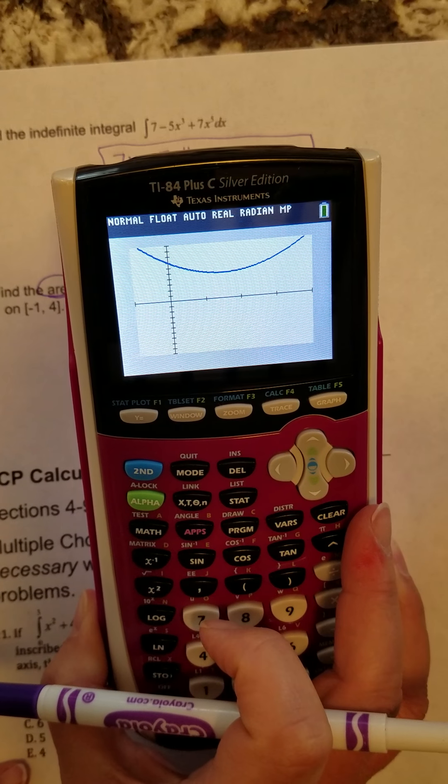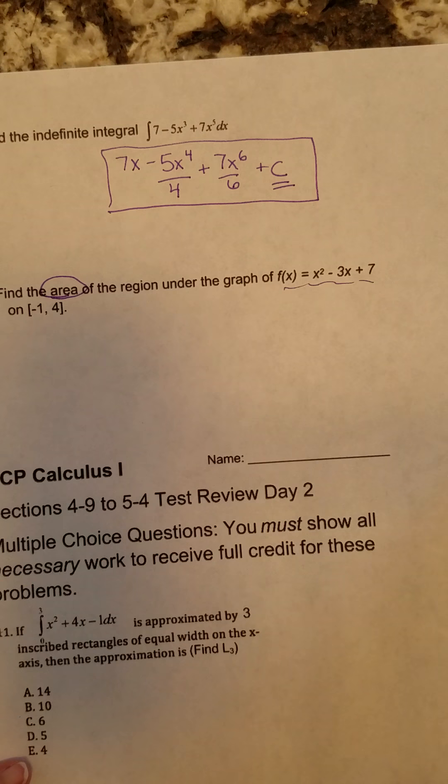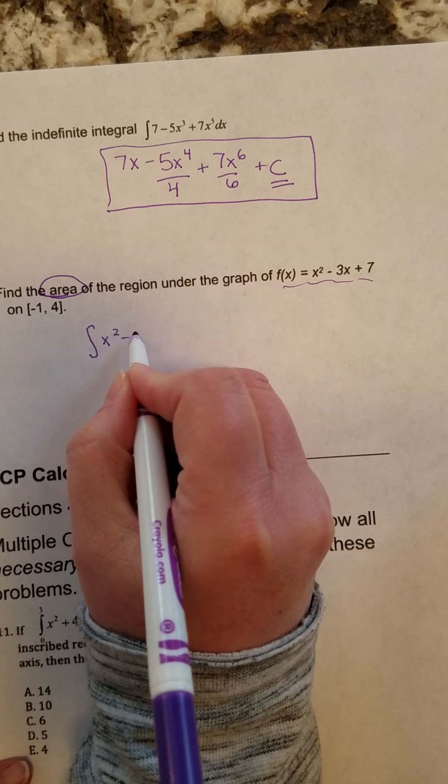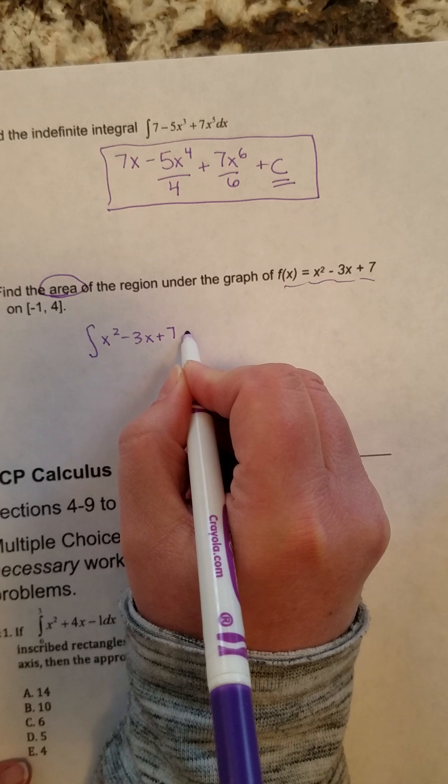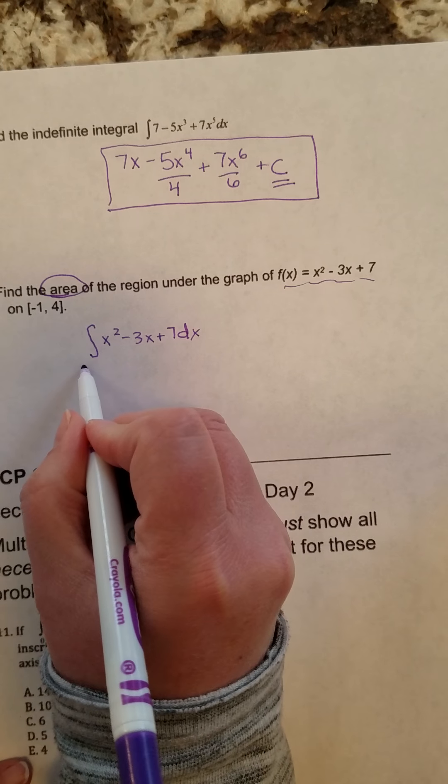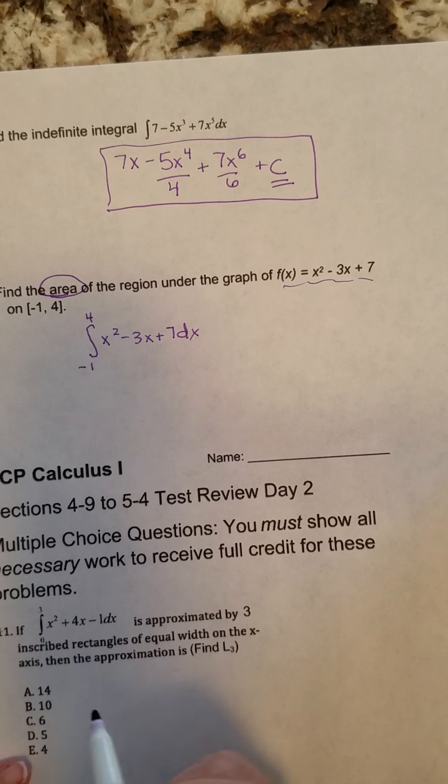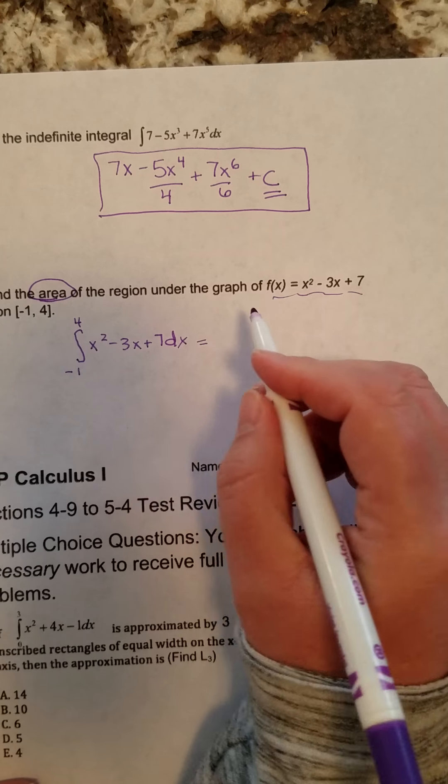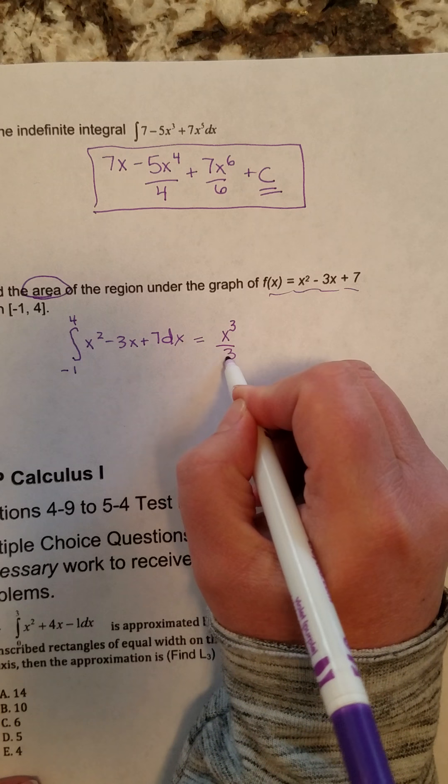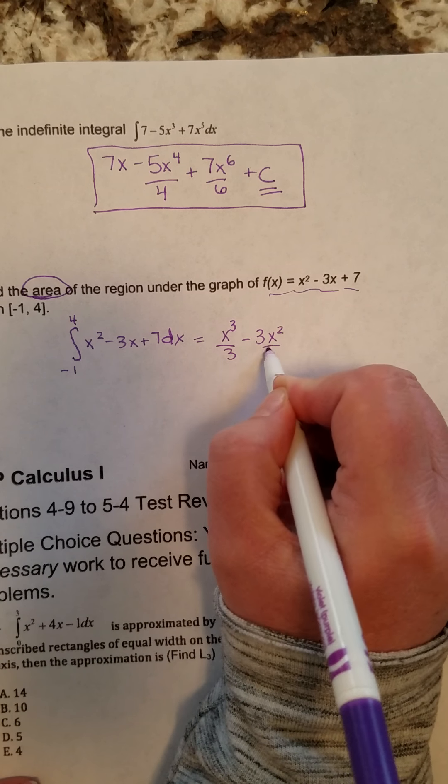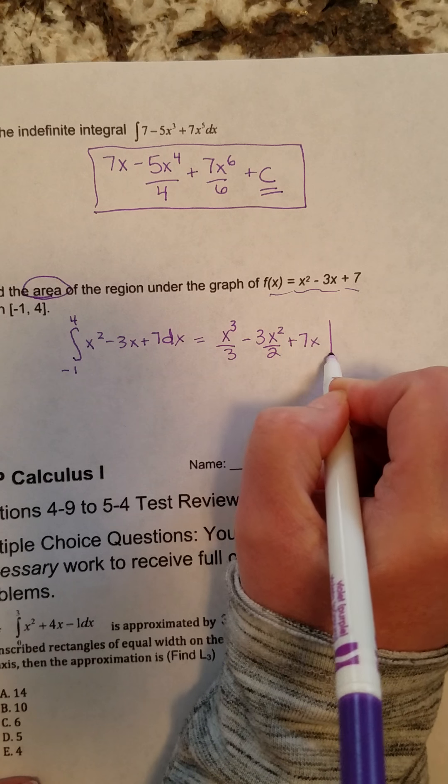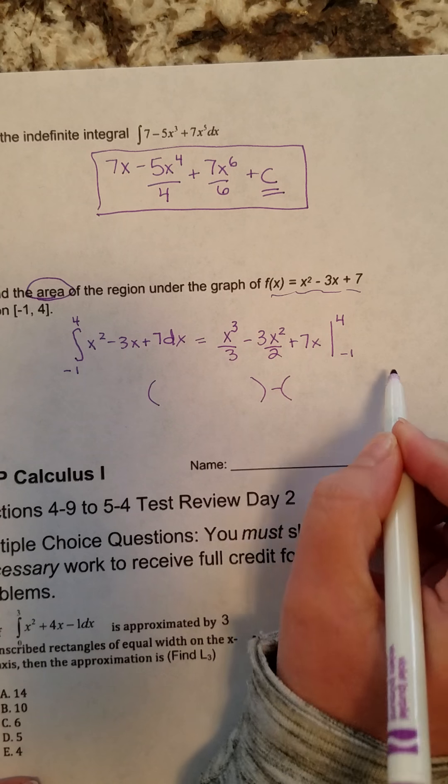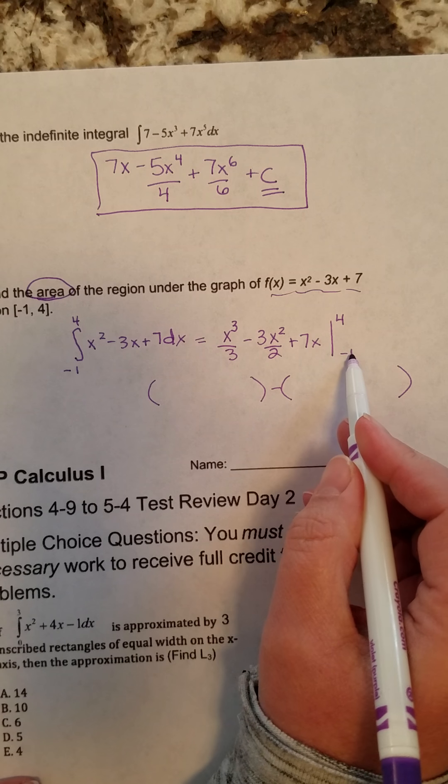So from that, I can take and set up an integral of the function x squared minus 3x plus 7 dx. And then this interval gives me my integral values from negative 1 to 4. And then from there, we evaluate the integral by adding 1 to the exponent, dividing by the new exponent, minus 3x squared over 2, plus 7x, evaluated from negative 1 to 4. All right, from here, let's see, top minus bottom. We're not quite lucky enough this time to have a 0 for this bottom number.